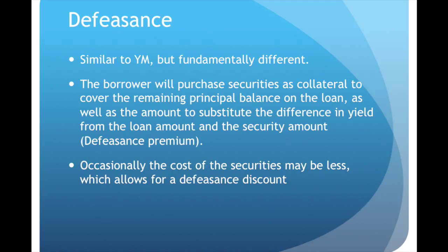Defeasance is similar to yield maintenance in purpose but very different in practice. If you have seven hundred thousand dollars of unpaid principal balance remaining on your loan, you are going to purchase government securities as collateral to cover the remaining principal balance. So if you have seven hundred thousand dollars outstanding at four percent interest, you have to purchase enough securities to generate the amount of money that your original loan payments would generate — essentially satisfying the debt service for the remaining term of the loan. You purchase those securities in a lump sum.